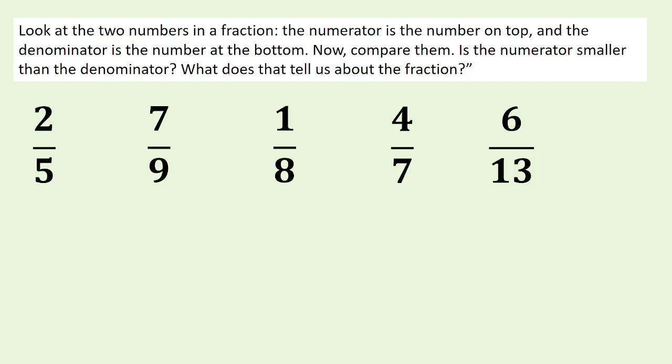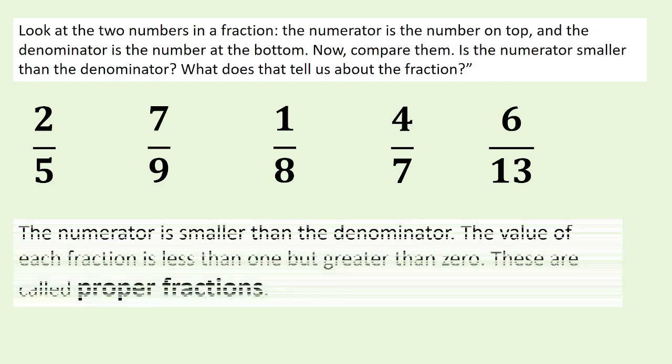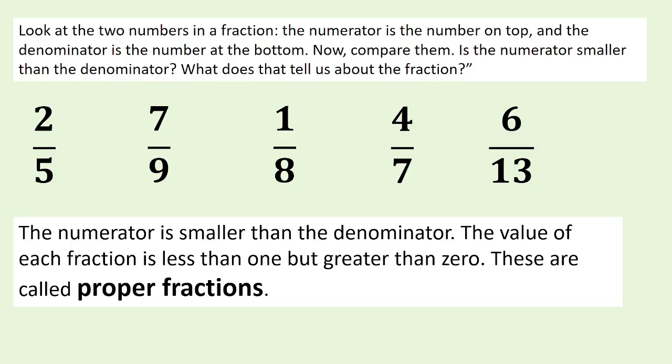Look at the two numbers in a fraction. The numerator is the number on top and the denominator is the number at the bottom. Compare them — is the numerator smaller than the denominator? The numerator is smaller than the denominator. The value of each fraction is less than one but greater than zero. These are called proper fractions.